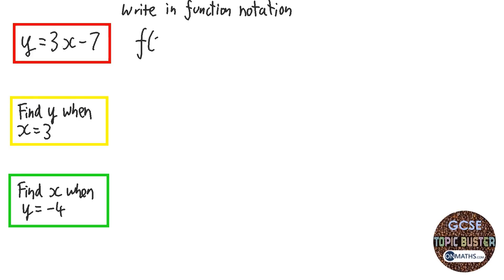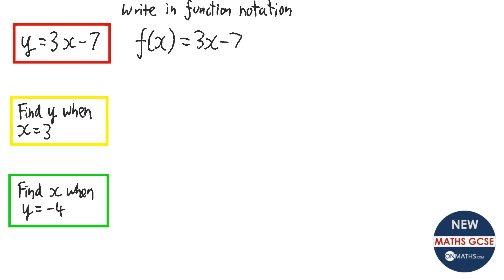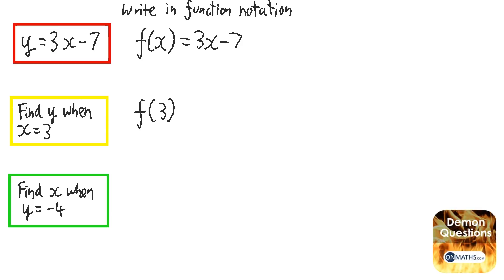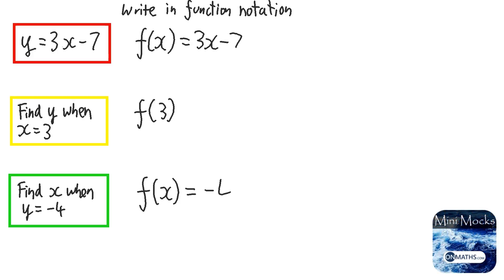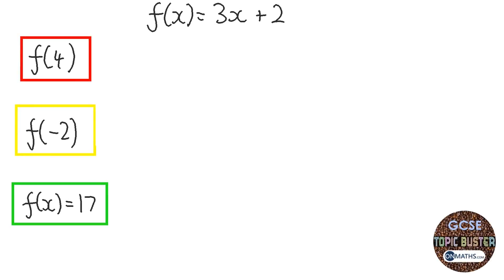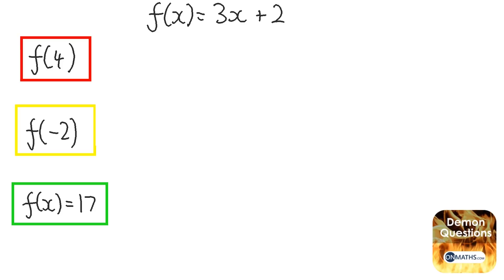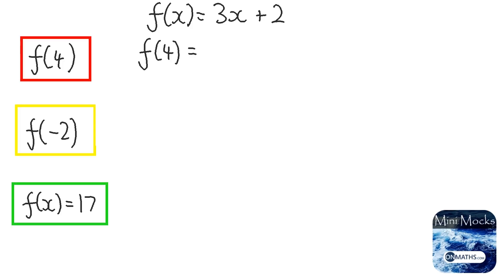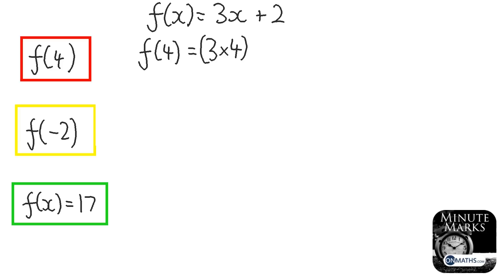For the first question, instead of y it's the function of x. The second one: when you put 3 into the function, what comes out — so f(3). For the third, we're finding what to put in to get minus 4. Given the function 3x plus 2, when we put 4 in: 3 times 4 is 12, plus 2 is 14. With negative 2: 3 times negative 2 is minus 6, plus 2 is minus 4.